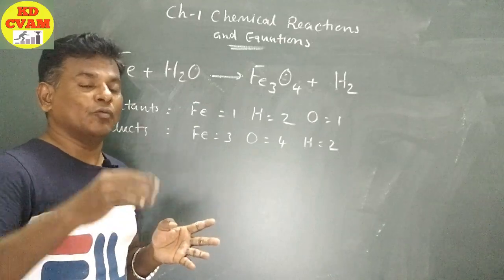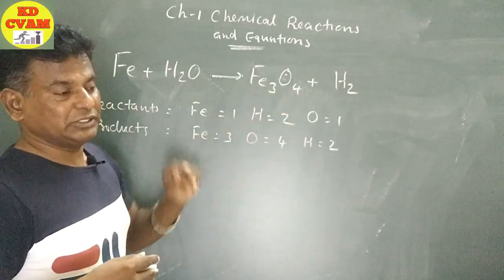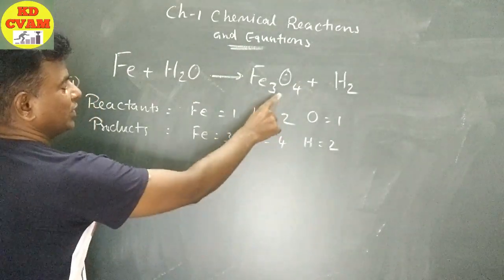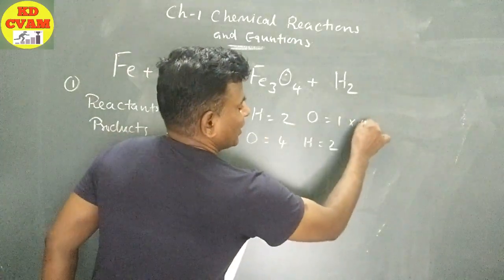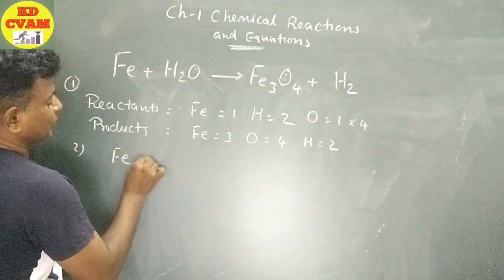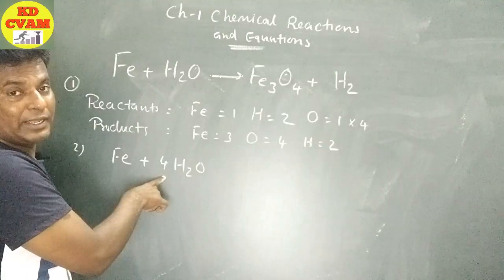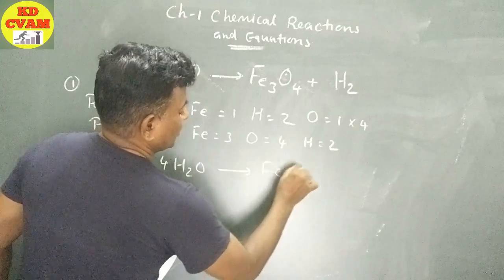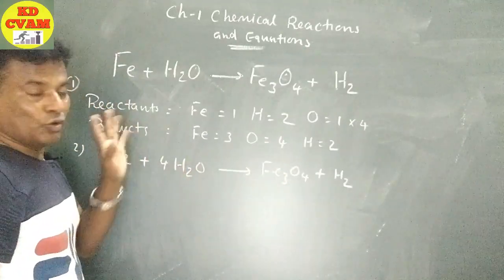We will try to solve starting from the highest atom molecule. If we look at the highest atom, it will be oxygen. Now here O4 on the left side in H2O, and O4 on the right side in Fe3O4. Here O is 1 in H2O, so we multiply by 4. Step 2: Fe plus 4H2O gives Fe3O4. Oxygen is now balanced, 4 oxygen balanced.